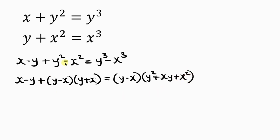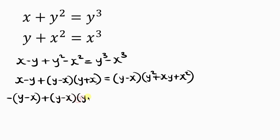Notice that I have y minus x here, but what I have on the left is x minus y. I can rewrite x minus y as negative of y minus x. So that gives us: negative of y minus x, plus y minus x times y plus x, equals y minus x times y squared plus xy plus x squared.